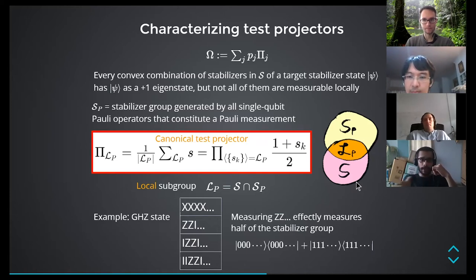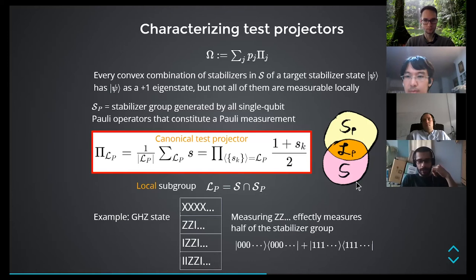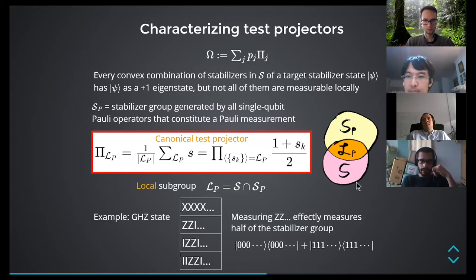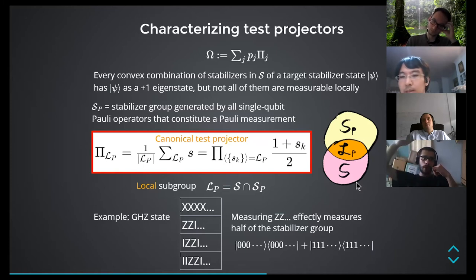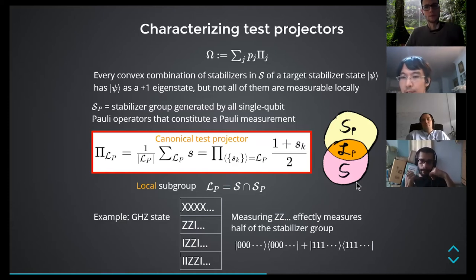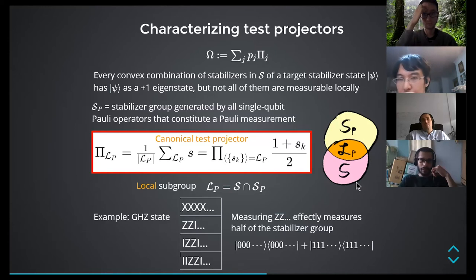If you have a zero-dimensional error correcting code you need n generators. If you perform a measurement which does not belong to the stabilizer group you end up perturbing that particular state. In this verification framework you use multiple copies of the same state — each copy is used for one measurement. Sometimes a measurement will disturb the state and you just use it now, then discard it.